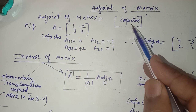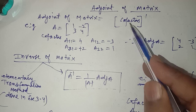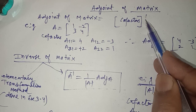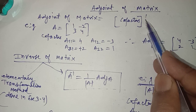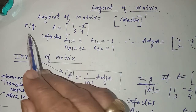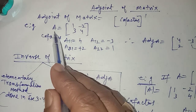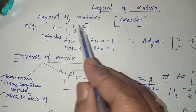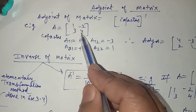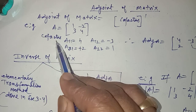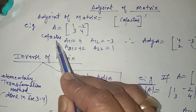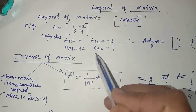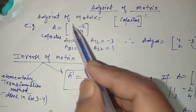You know how to find the cofactors and you know what is the meaning of the transpose. Let us take an example of a 2x2 matrix: [1, -2; 3, 4]. We simply find the cofactors A11, A12, A21, A22.